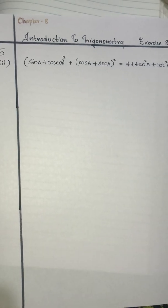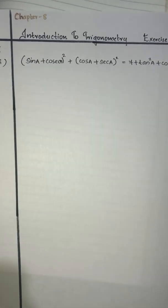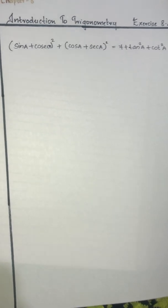Hi students, today we are going to discuss the eighth sub-question of the fifth question from Exercise 8.4. Here we need to prove that (sinA + cosecA)² + (cosA + secA)² is equal to 7 + tan²A + cot²A.